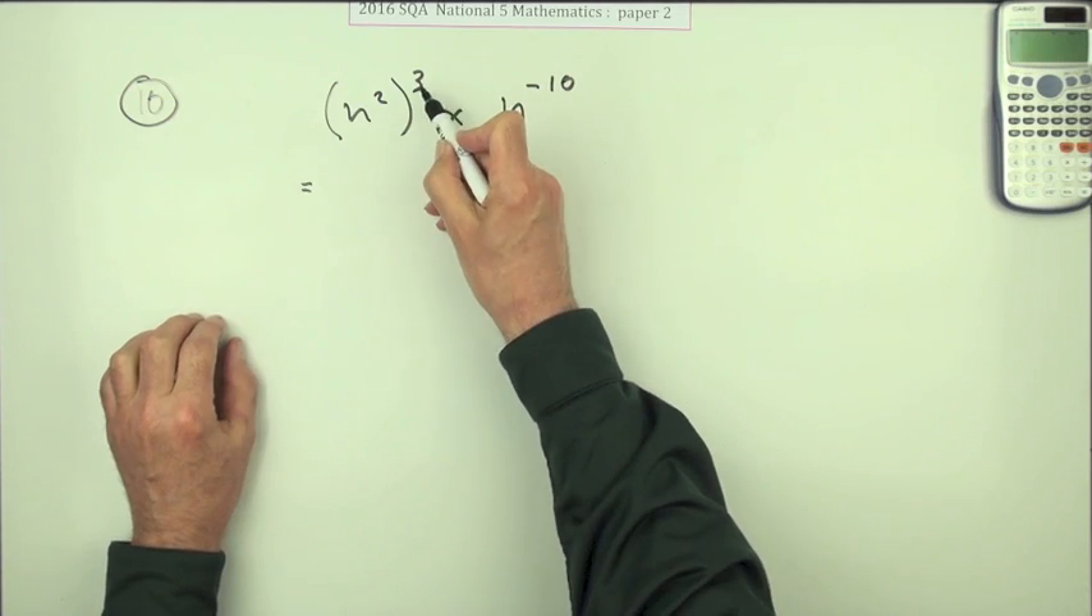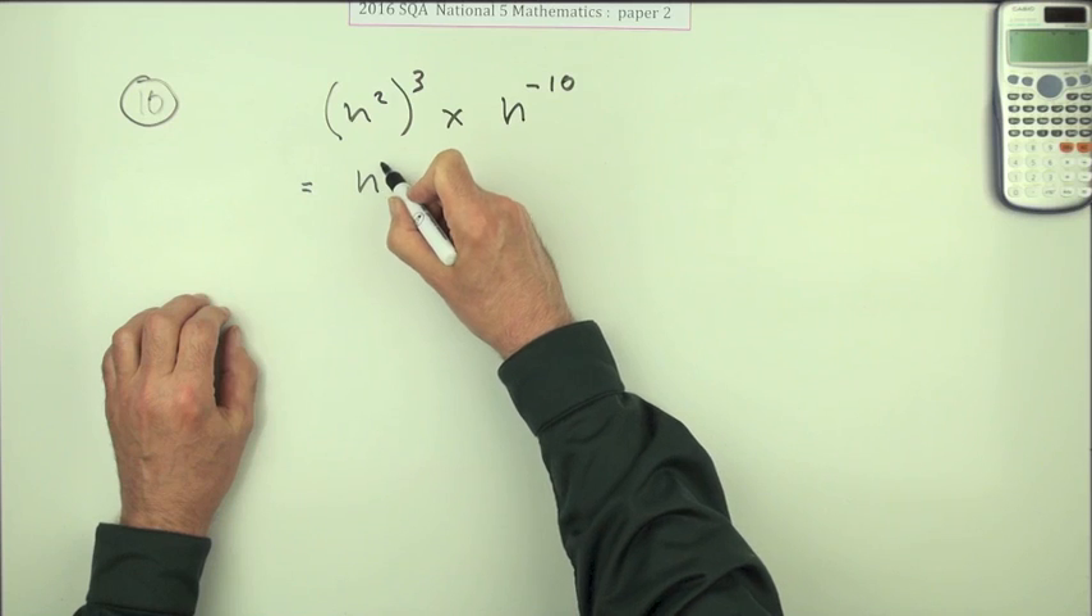So there's two parts to this. The first part is I've got a power of a power. Well, you've got a power of a power, so that's 2 times 3, which is n to the power 6, to be multiplied by n to the power negative 10.